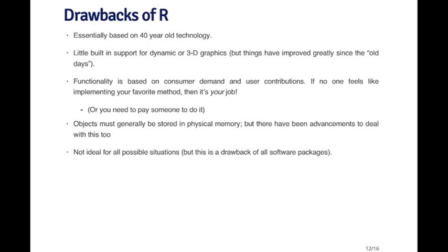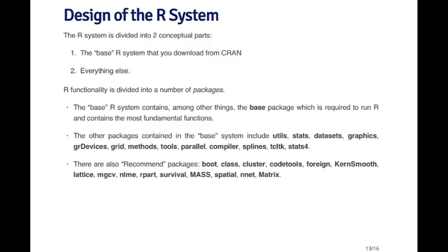R is not ideal for all possible situations, and many people have very high expectations for R expecting it to do everything — but it doesn't. The basic R system is divided into two conceptual parts. There's the base R system that you download from CRAN — the Comprehensive R Archive Network — which is the go-to place for all things R. The base system contains what's called the base package, with all the low-level fundamental functions needed to run the R system, plus other packages such as utils, stats, datasets, graphics, and a bunch of other fundamental packages that more or less everyone might use.